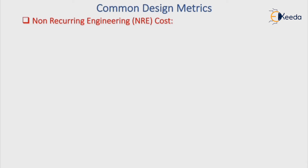The first one is non-recurring engineering cost, also known as NRE cost. It is the one-time initial cost of designing a system. Suppose you want to design some application-specific system; the initial cost paid by the user for designing that system is nothing but NRE cost.